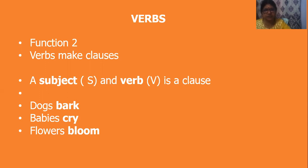Let us look at the second function. Verbs make clauses. A clause must have a subject and a verb. They are represented by the letters S and V. 'Dogs bark,' 'babies cry,' 'class blues' — all these three are clauses because they have a subject and a verb. Try getting a list of verb clauses which have a subject and a verb.